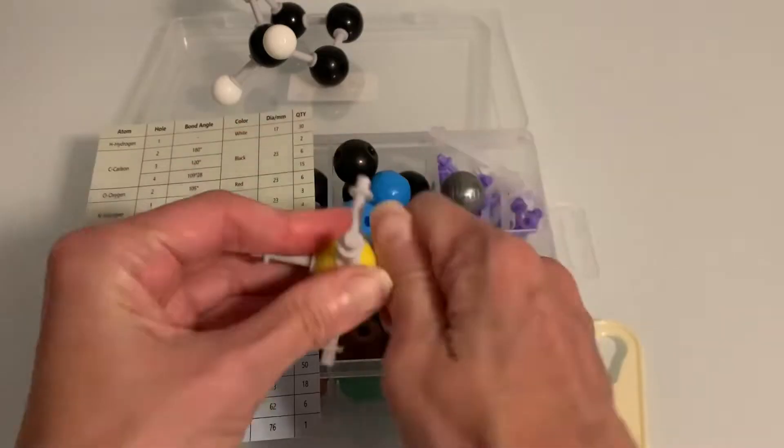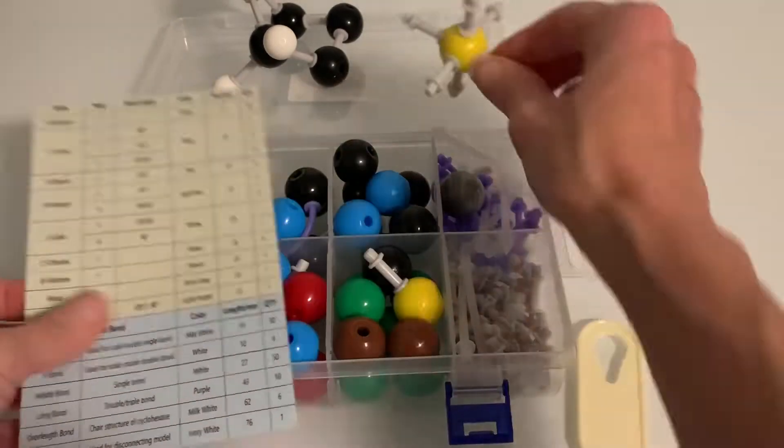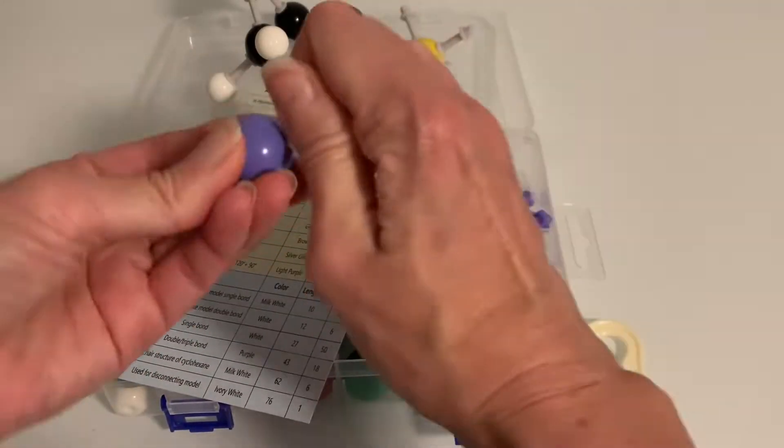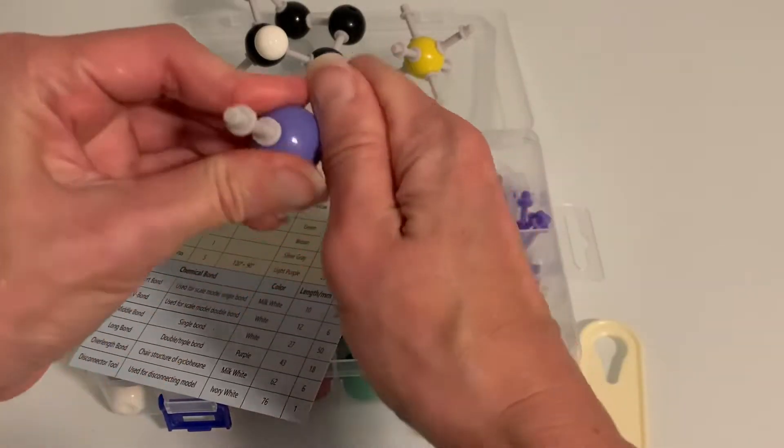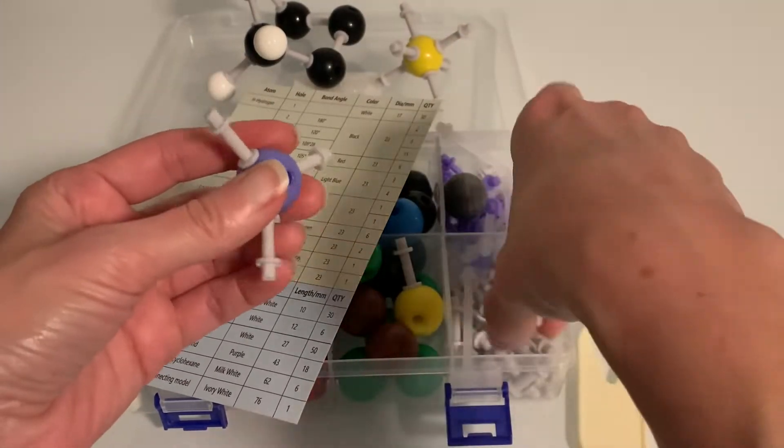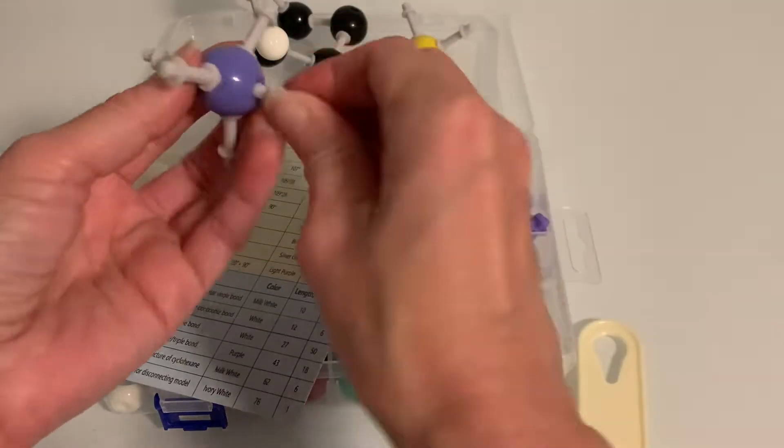It also comes with atoms that have five holes in them which would be used to make models of molecules that have trigonal planar geometry or trigonal bipyramidal geometry and both of these would be ideal for students who are in general chemistry.